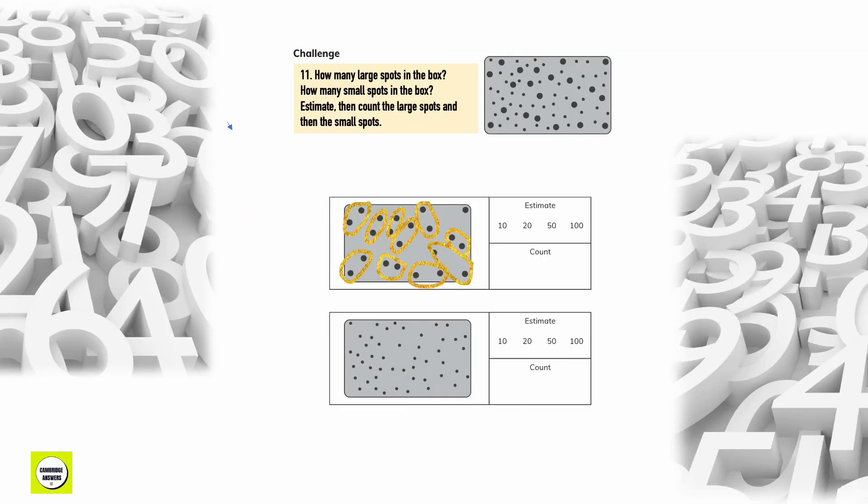How many large spots in the box? How many small spots in the box? Estimate then count the large spots and the small spots. We estimate it to be 20 when we count it's 21. We estimate it to be 50 when we count it is 48.